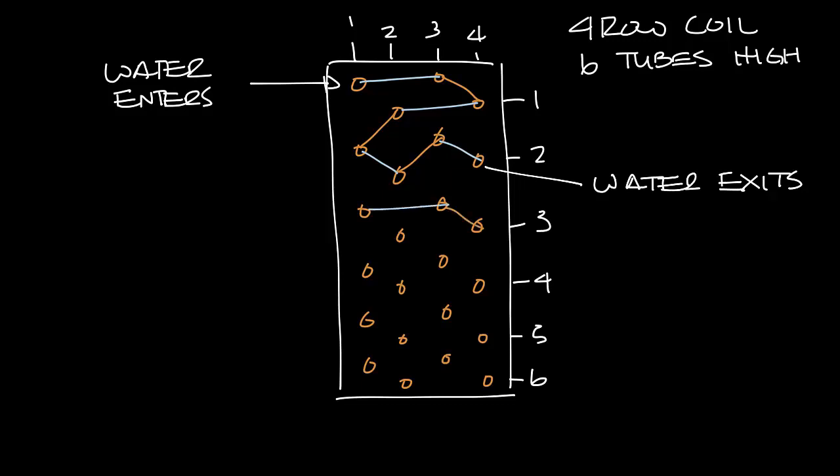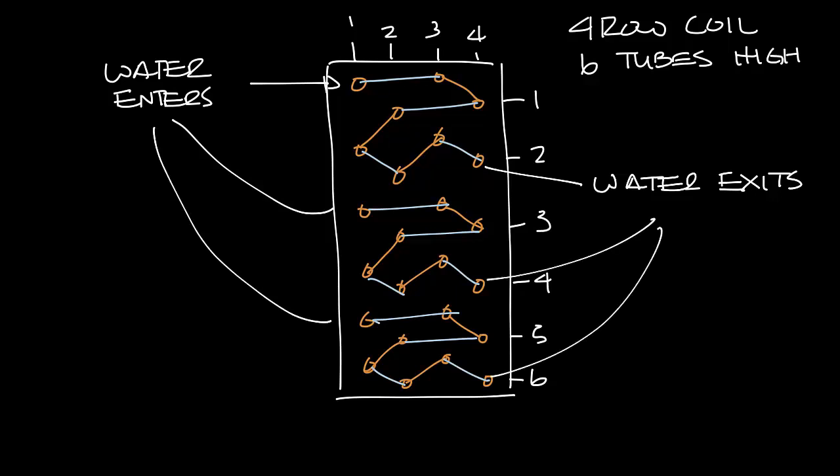So let's draw that for the rest of the tubes. We'll have the same pattern, and then down here on the last set. So what you can see here is that we have three places where the water will enter the tubes in the water coil and three places where the water will exit. So these are places that would connect to the headers, and this makes it a three circuit water coil because we have three connections to our headers.